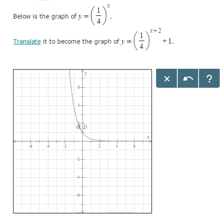Here we're going to look at translating the graph of an exponential function, so exponential meaning the exponent is the thing we don't know, so this is 1/4 to the x.